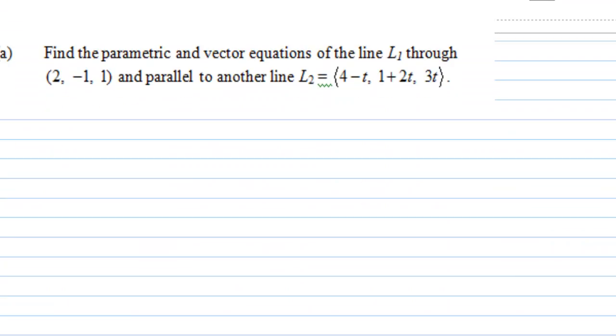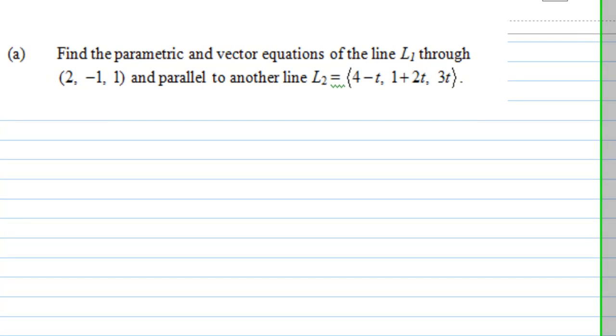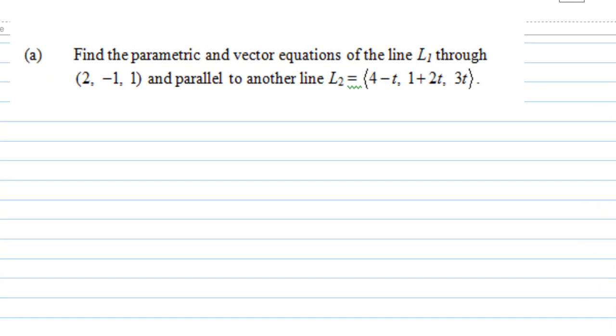So let's go back to our problem part A. We are given line L1 passing through the point (2, -1, 1) and parallel to line L2. Now let's examine what is L2 first.